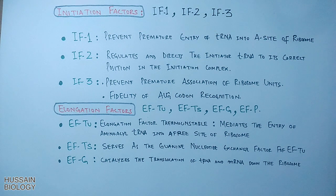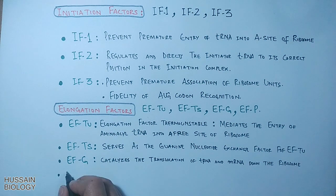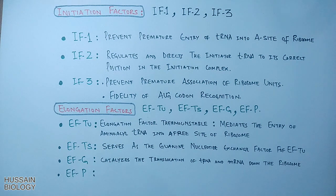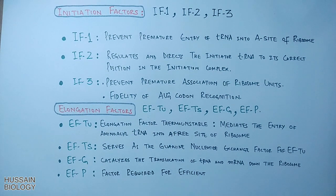EF-G aids in ribosomal disassembly after translation termination. Finally, we have EF-P, which is required for peptide bond formation between amino acids.